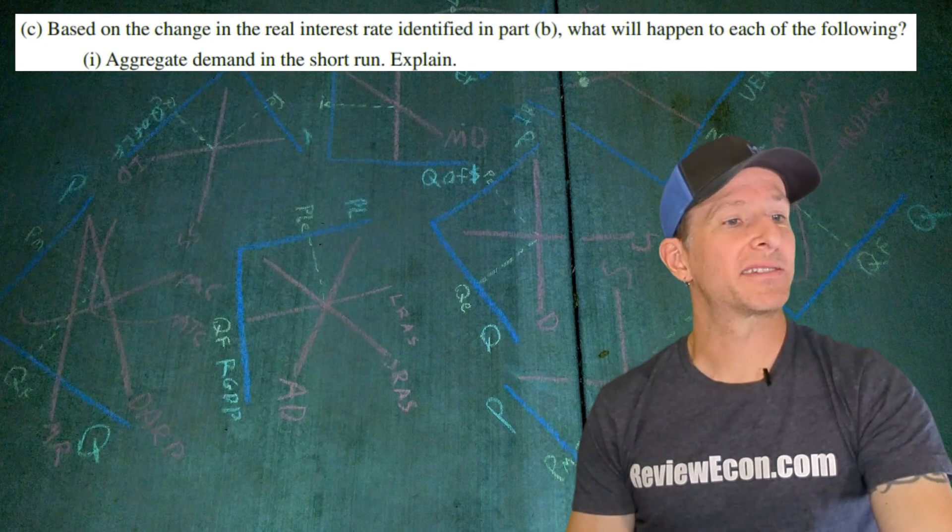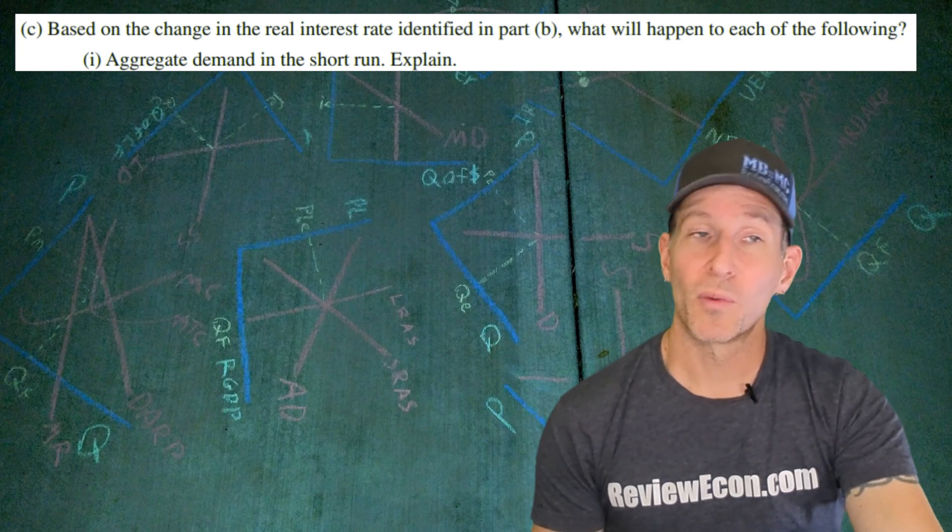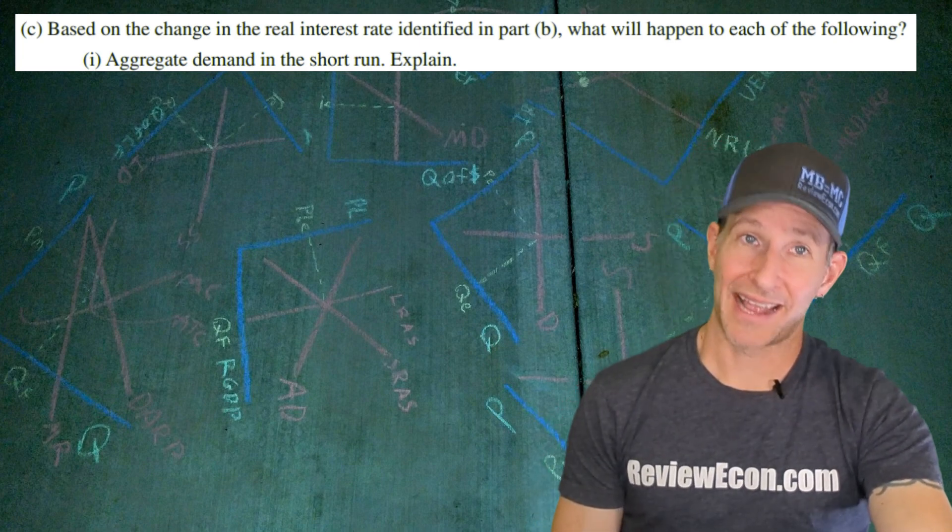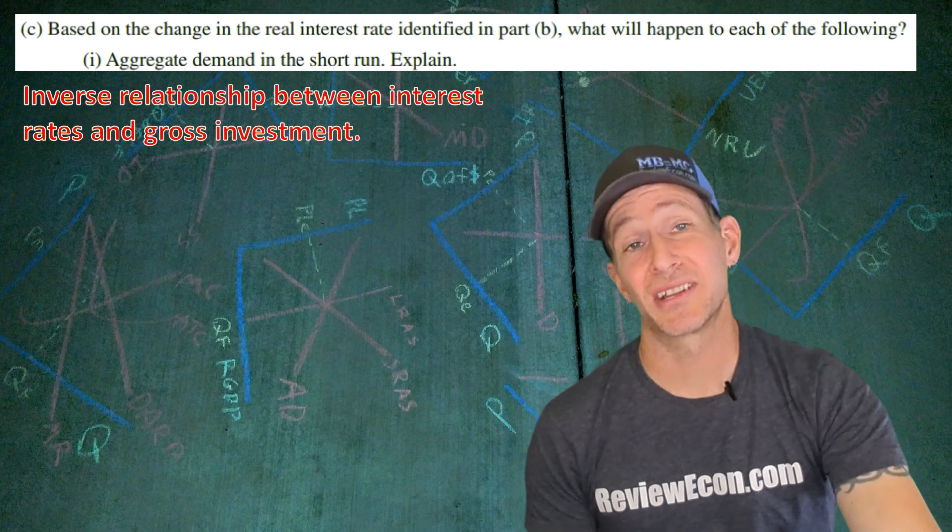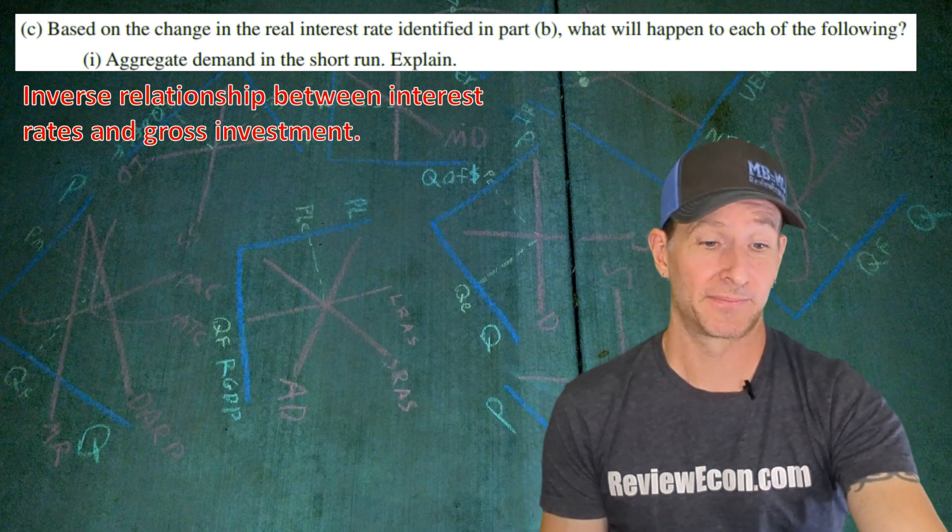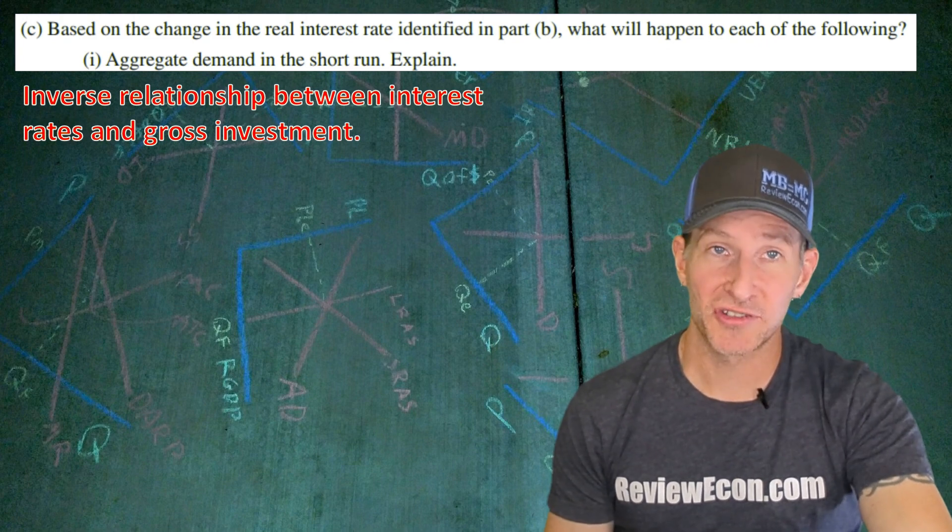For part C, we're going to say, based on the change in the real interest rate we just identified, what happens to aggregate demand in the short run? And we have to explain. To answer this question, it's helpful to remember there's an inverse relationship between the interest rate and gross investment. And since we just saw a lower interest rate, that means investment is going to increase and aggregate demand is going to shift to the right.